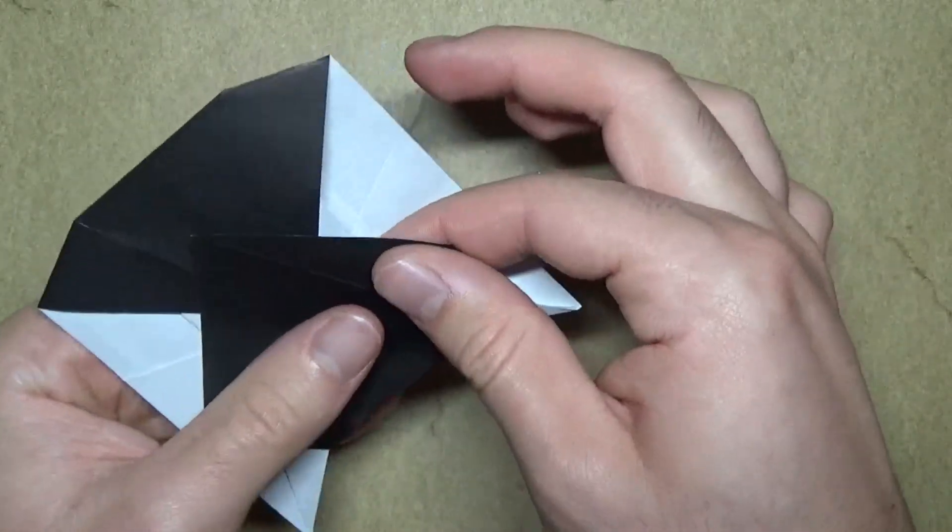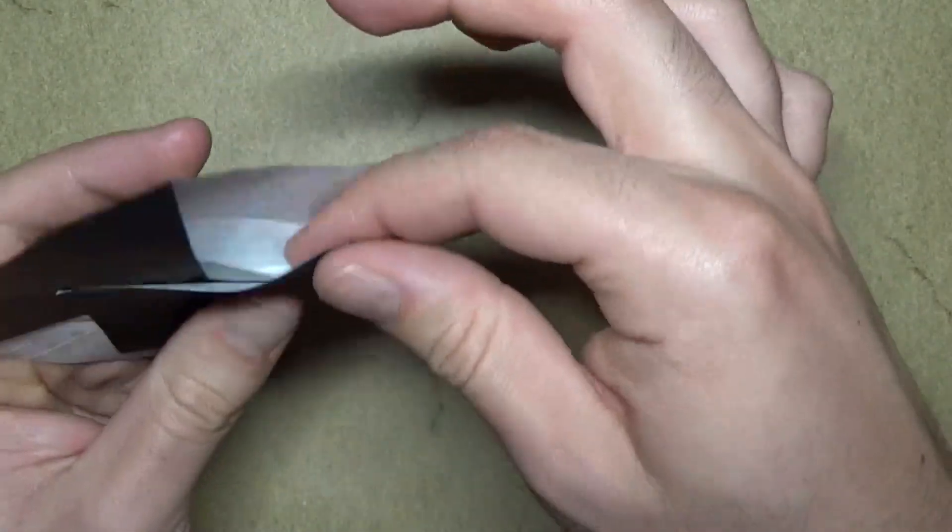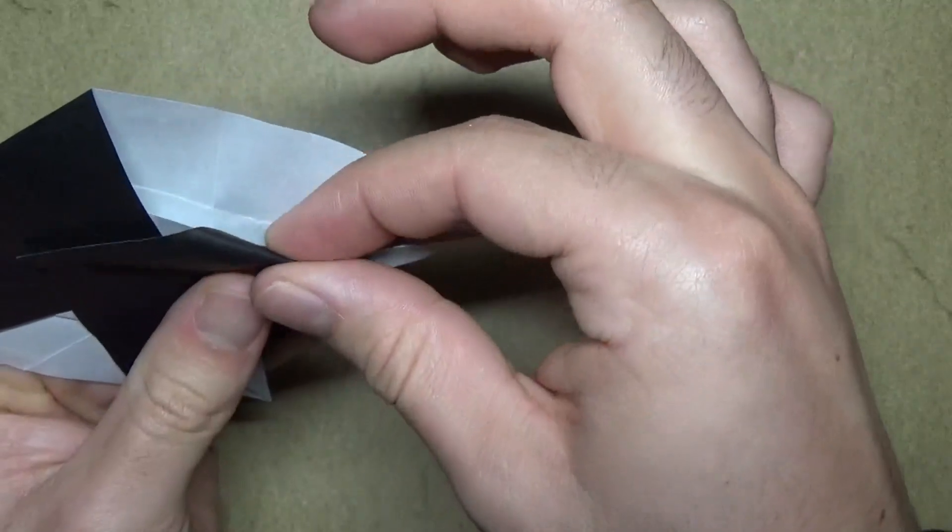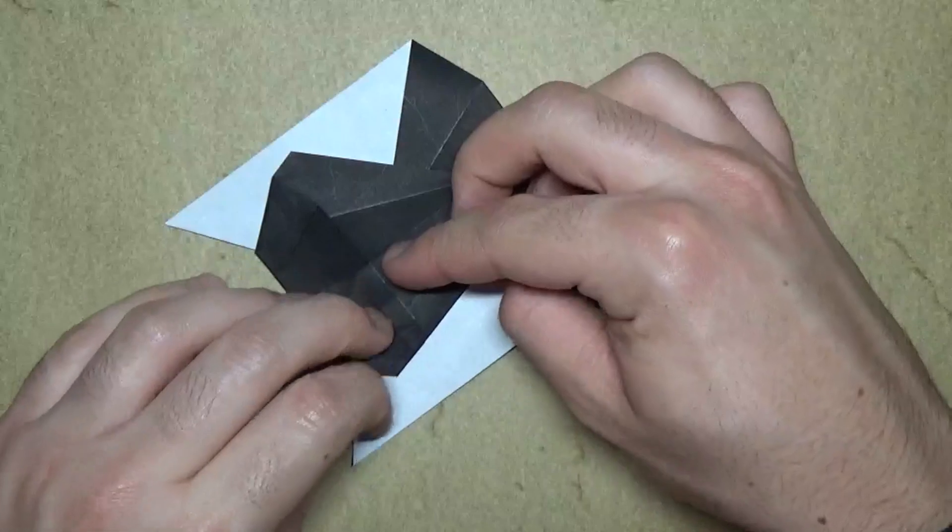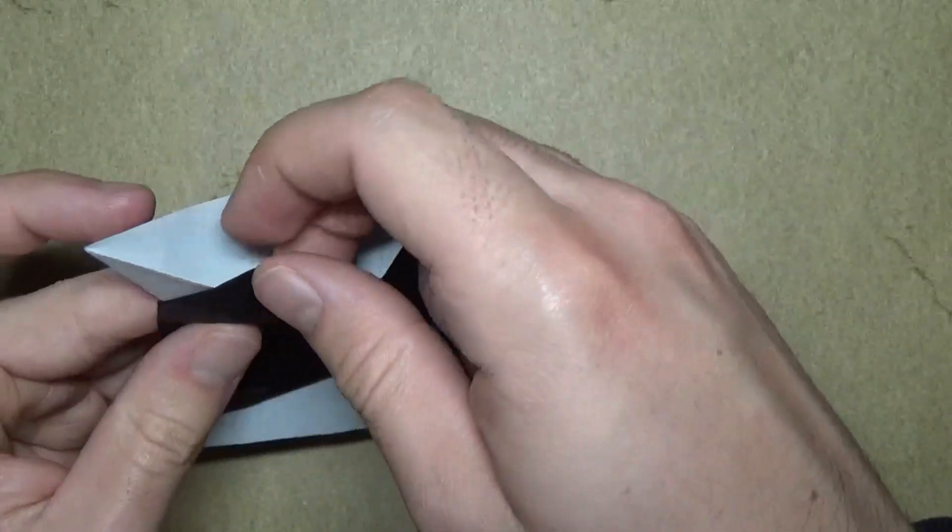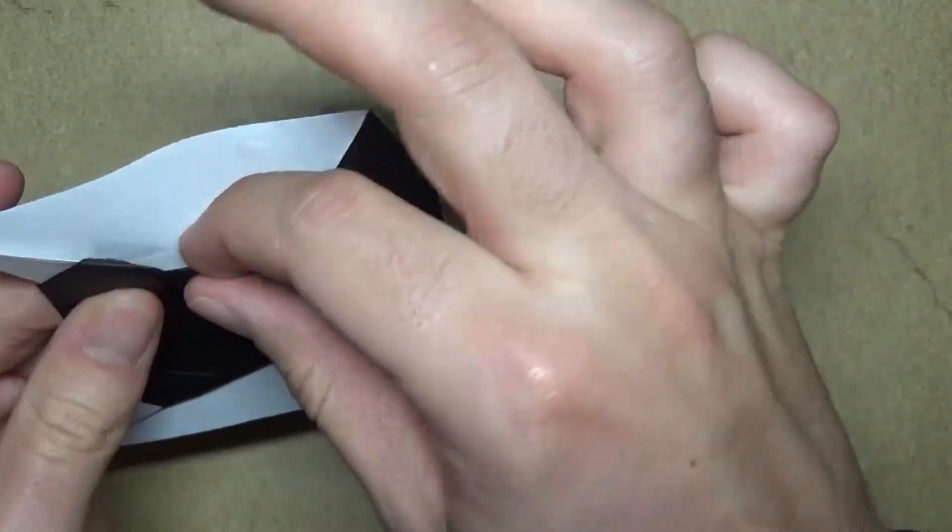Okay. And now. This is my favorite step. Take this flap and tuck it into the pocket. That's kind of satisfying. I really like that step. And repeat on this side too. Alright.